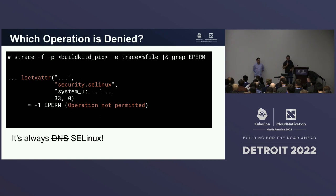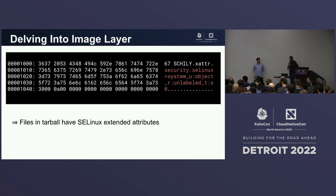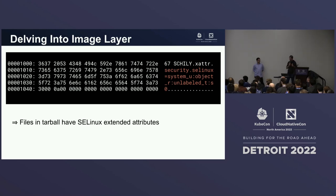I made the joke that it's always DNS because I tend to talk about networking issues — and to be fair it's often DNS, but it's also quite often SELinux. And the only thing I know how to do with SELinux is disable it. We had a very good idea of what might be happening, so we downloaded the layers of the image, extracted the tarball, looked at its contents, and as we suspected, there are actually SELinux labels on the files.